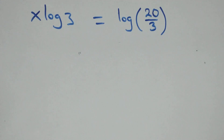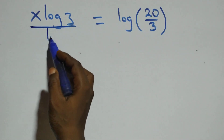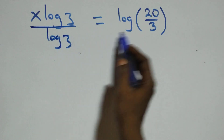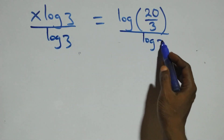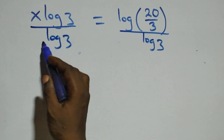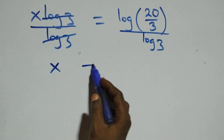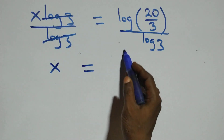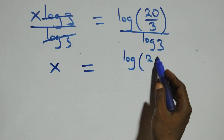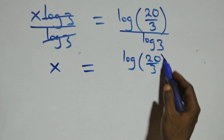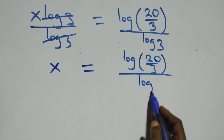The next step: we divide both sides by log three. Log three cancels, and we have x equals log of twenty over three, divided by log three.